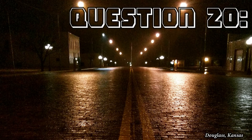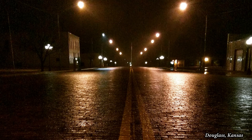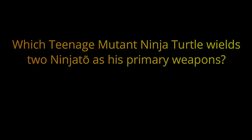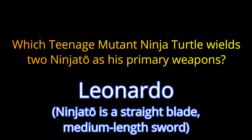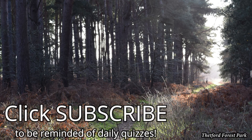Question 20. Which Teenage Mutant Ninja Turtle wields two Ninjato as his primary weapons? The answer is Leonardo. A Ninjato is a straight-blade, medium-length sword, commonly confused with the Katana, which is longer and has a curved blade.